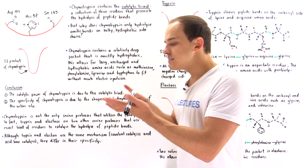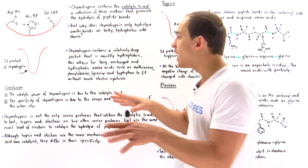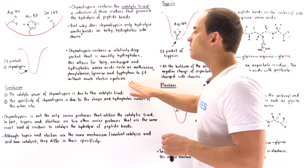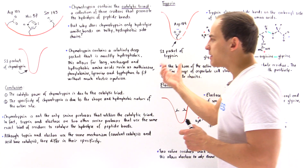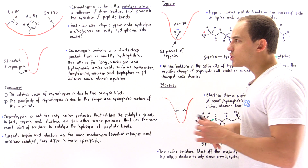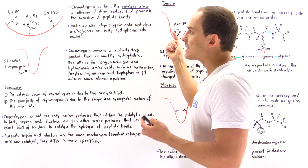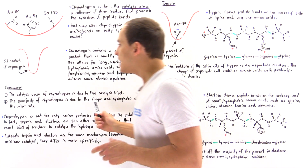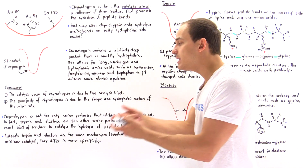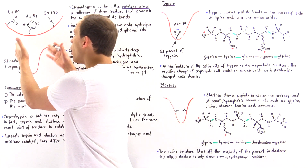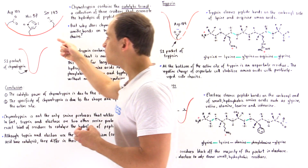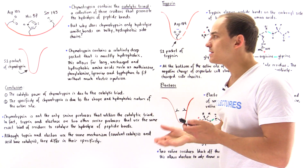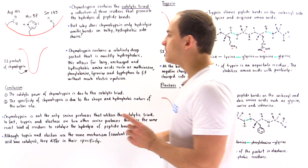Because of that structure of the S1 pocket, only those amino acids that contain side chain groups that are long, nonpolar, and do not have any charges will actually be able to fit into that pocket, into the active site, without creating too much electric repulsion. So amino acids such as methionine, phenylalanine, tyrosine, and tryptophan. It's the catalytic triad in the active site — the presence of these three individual amino acids — that give chymotrypsin its catalytic power. But it's this long, narrow, mostly hydrophobic shape of the S1 pocket that actually gives chymotrypsin its specificity to cleave only on the carboxyl end of specific side chain groups.